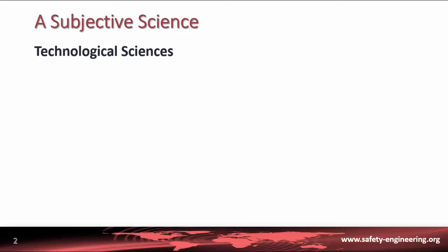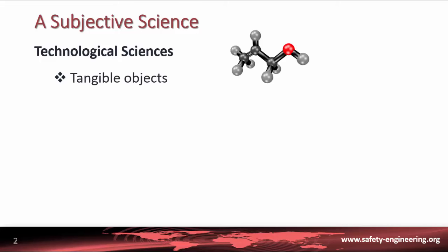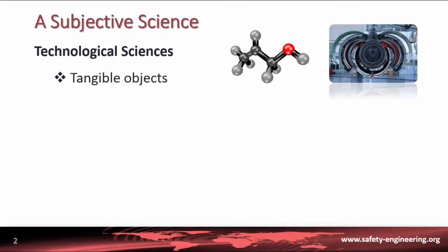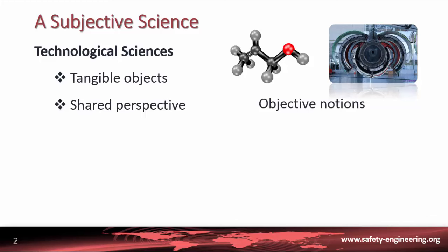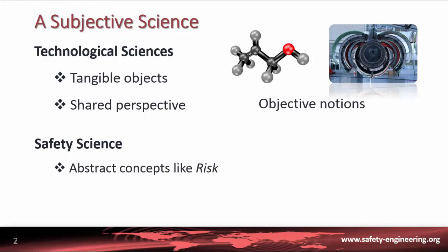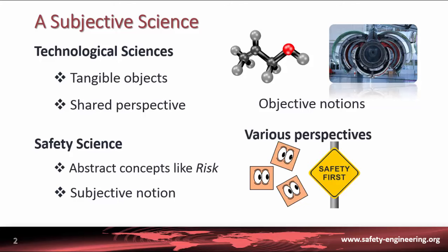Most technological sciences deal with tangible objects. Chemistry and biology handle molecules and components. Physics, mechanics and civil engineering study matter and materials. This reality allows people to easily share a common perspective on the elements involved, as they are based on objective notions. Safety science, on the contrary, deals with abstract concepts like risk. Even if the consequences of accidents affect people in a concrete manner, safety remains a subjective notion. As a result, various perspectives on safety exist, as well as various approaches for addressing them.